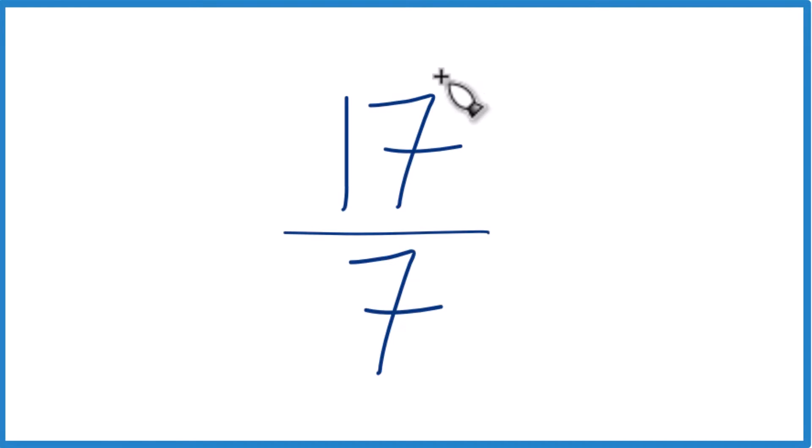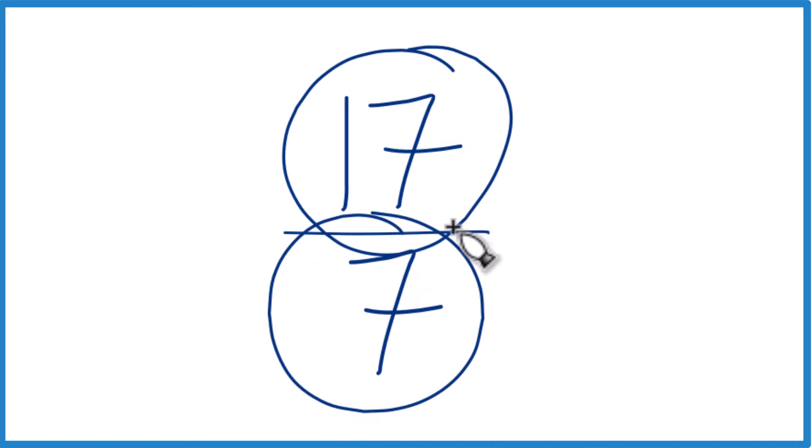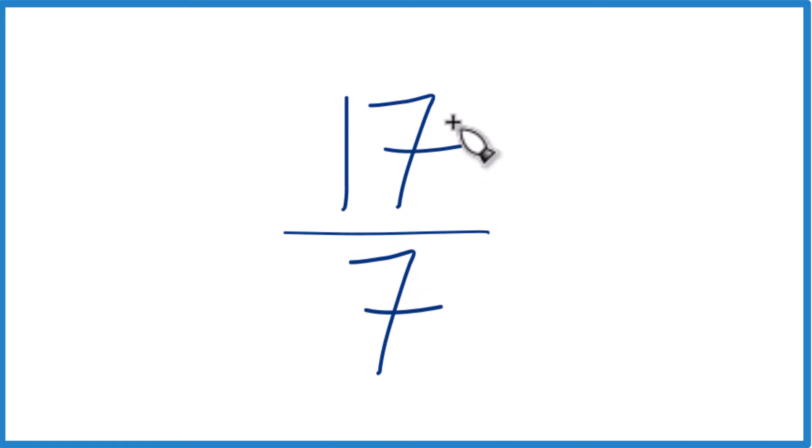So we're going to convert the improper fraction 17 sevenths to a mixed number. We say it's an improper fraction because the numerator here is larger than the denominator.